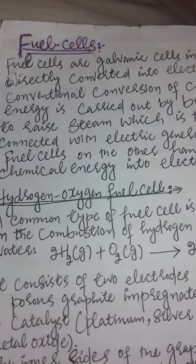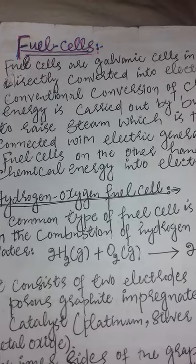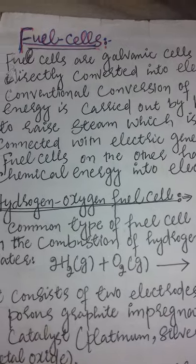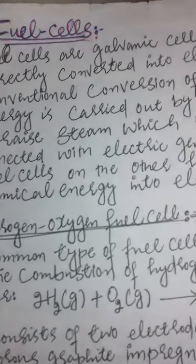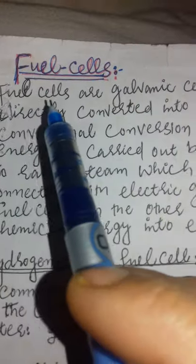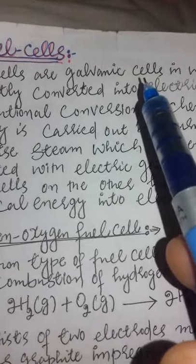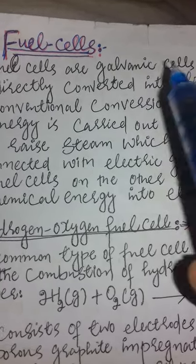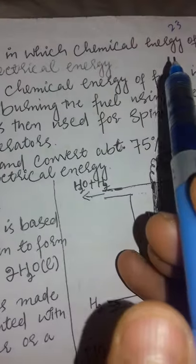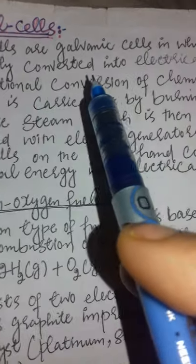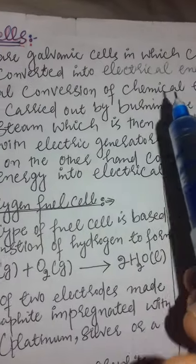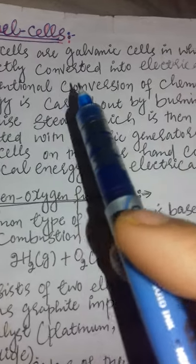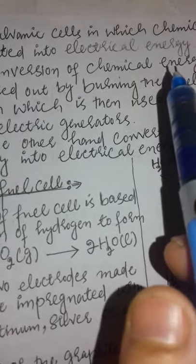Good evening friends, today our topic is fuel cell — the fuel cell which is used in spacecraft has a lot of advantages. First of all, let's see what is a fuel cell. Fuel cells are galvanic cells, just like the galvanic cells such as Daniel cells we studied before. Fuel cells are galvanic cells in which chemical energy of fuels is directly converted into electrical energy.